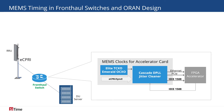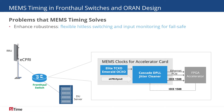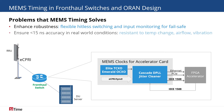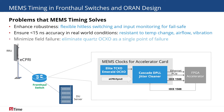Cascade can also accept inputs including IEEE 1588 from the FPGA accelerator. In the front-haul switch, Sightime's MEMS technology enhances robustness by adding input monitoring, ensures under-15 nanosecond accuracy with resistance to temperature change and airflow, and minimizes field failures by eliminating the Quartz OC-XO.